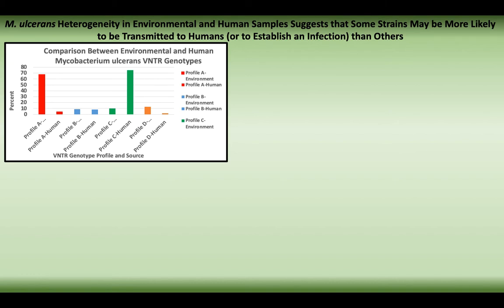We know a great deal about M. ulcerans and Buruli ulcer pathogenesis, but we don't know how M. ulcerans is transmitted to humans. It's associated with aquatic habitats, but we don't know how it's transmitted — what are those contact factors leading to transmission?